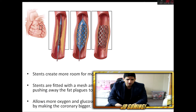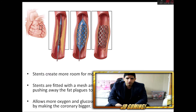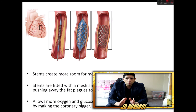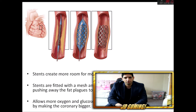This is why stents are used. Stents essentially create more room for blood to flow. Stents are fitted with a mesh and a balloon which inflate, pushing the fat plaques to the side, allowing more glucose and oxygen to get to your heart by making the coronary bigger. These are like the snow trucks that come and push the snow to the side so your car can get past — that's basically what a stent does.